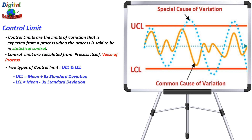The lower control limit might come to a negative value. In such a case, we take it as zero, because there is no point going beyond zero. In short, control limits are based on the performance of your process. These values are calculated from data and they tell you about the variability in your process.